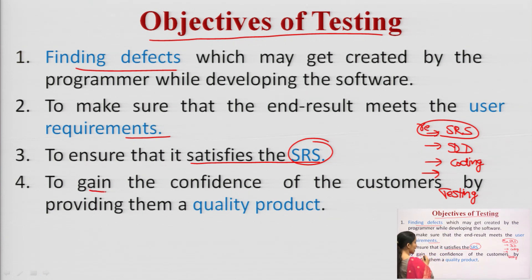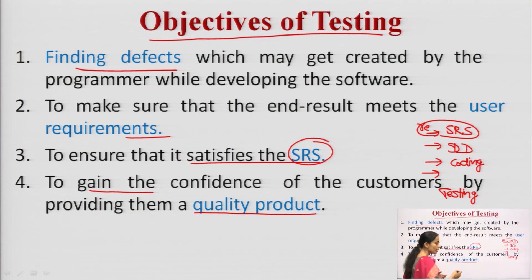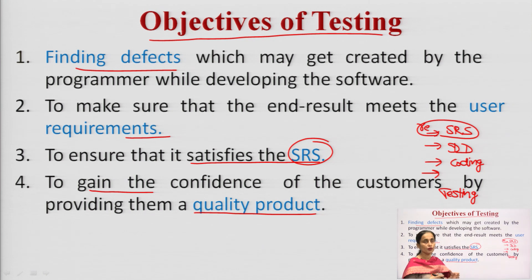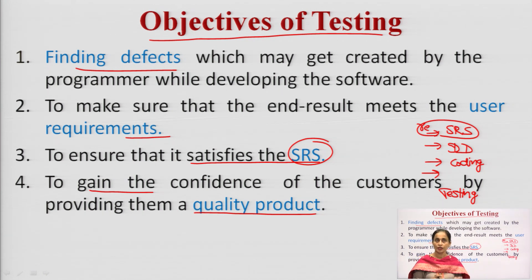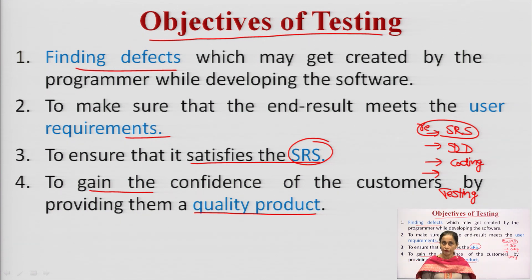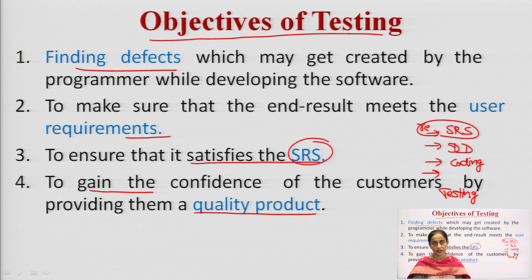Then, to gain the confidence of the customers by providing them a quality product. Our ultimate aim for writing any software — whether it is automation or something else — is to deliver a quality product. Quality product means my software is behaving as per the instructions given to it.